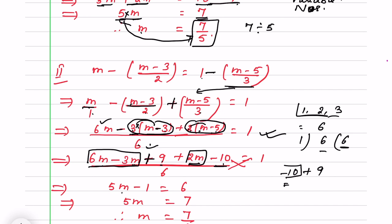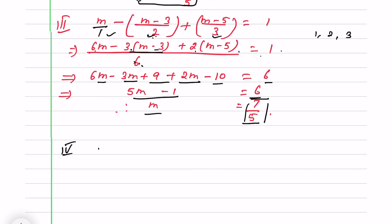Minus 10 plus 9 gives minus 1 — with negatives and positives we subtract; the sign belongs to the greater absolute value, which is minus 10. So we get 5m minus 1 over 6 equals 1. Cross multiplying gives 5m minus 1 equals 6, then 5m equals 7, and m equals 7 by 5. We get the same answer.